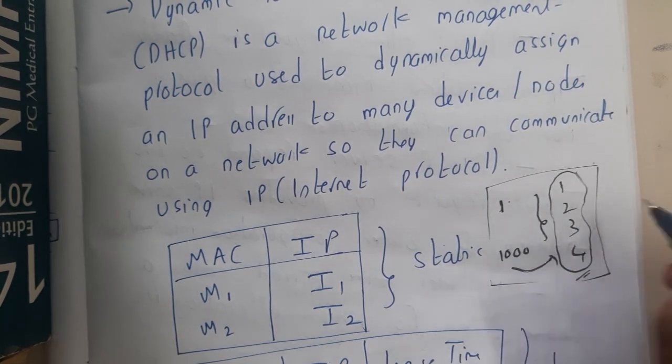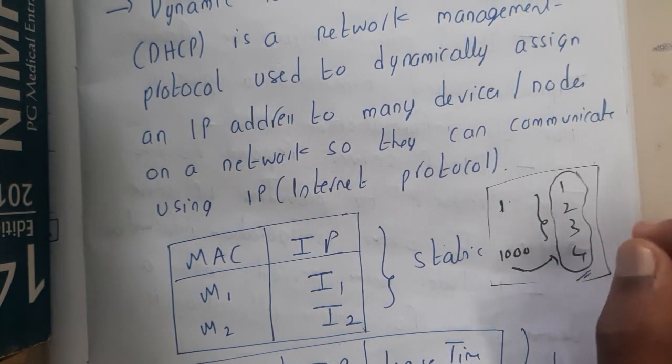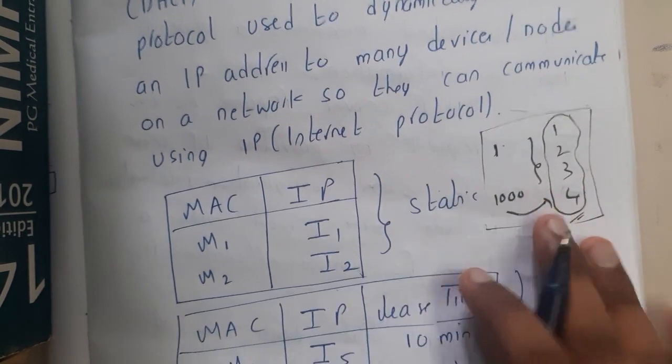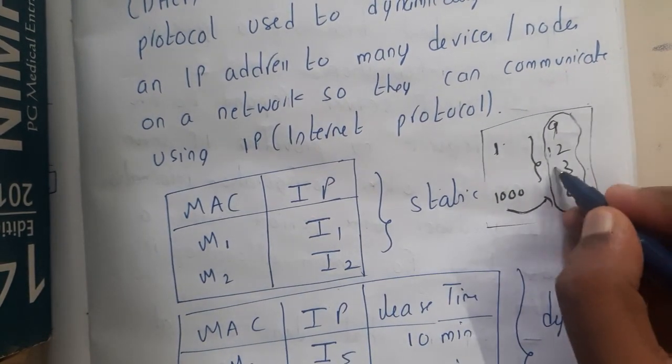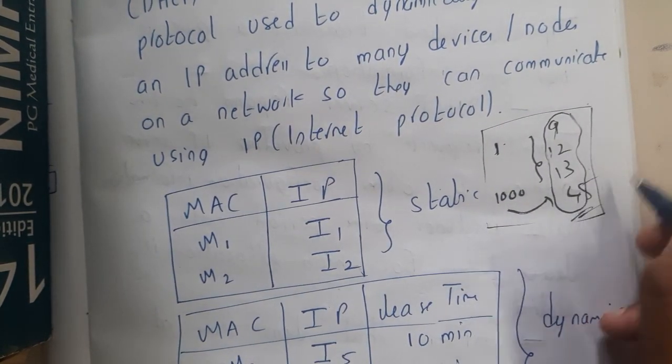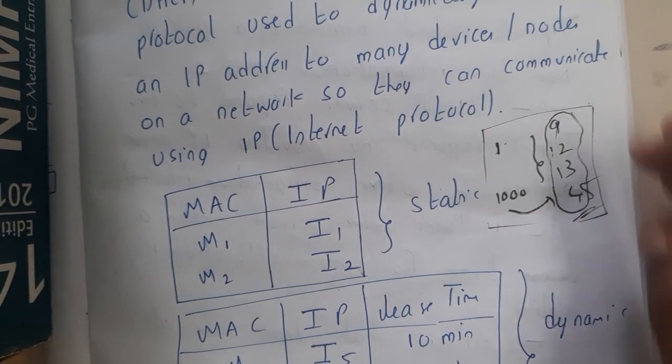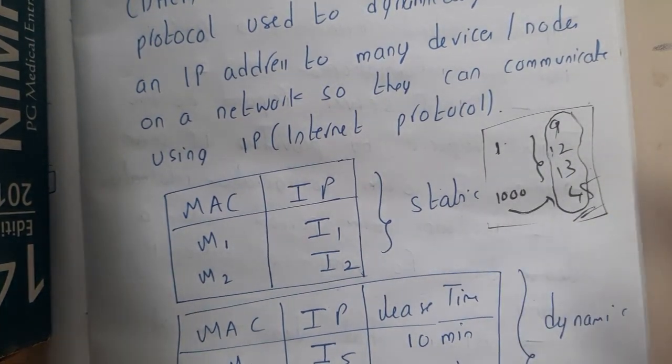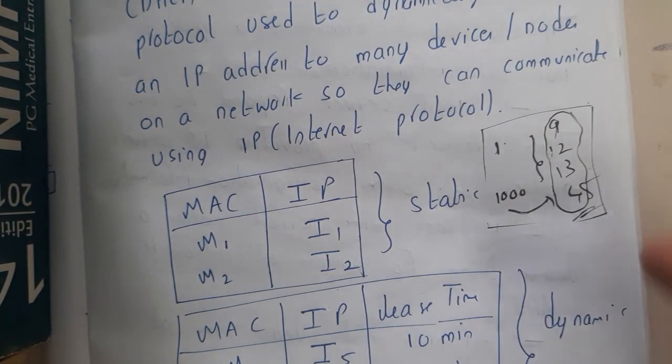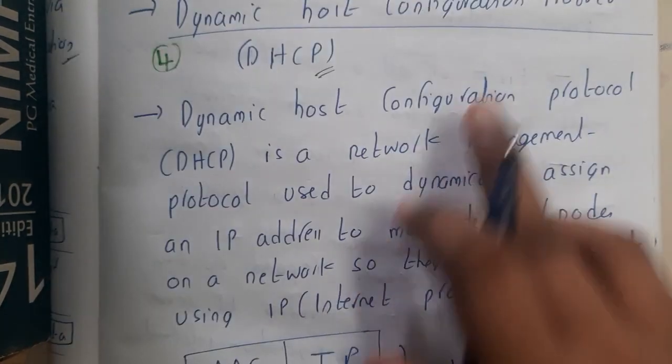What if it is a dynamic method? So randomly a number will be given - 9, 12, 13, 45, in that way. If random numbers are given by an algorithm or a program, that concept is nothing but dynamic allocation. Here, what we are allocating is IP addresses.